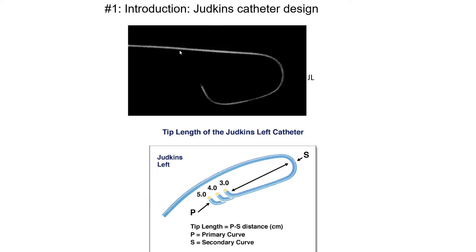The most commonly used catheter for left coronary engagement is the Jutkins left catheter. It has two bends or curves: the primary curve and the secondary curve. The distance between those two curves defines the size — it can be Jutkins left 3, 4, 5, or 6, measured in centimeters. Most commonly, we use a Jutkins left 4 from a femoral axis and Jutkins left 3.5 from a radial axis, but we may use anywhere between 3 and 6 depending on the size of the aorta.